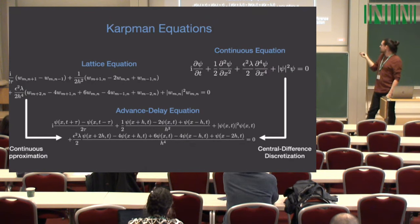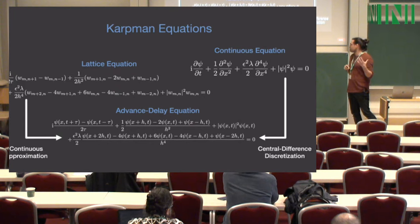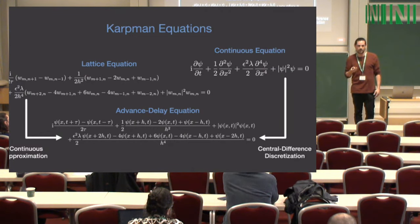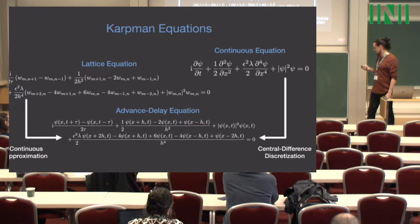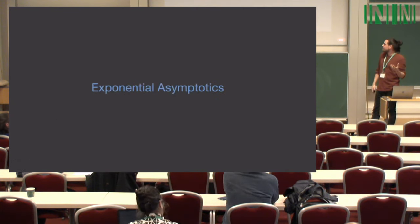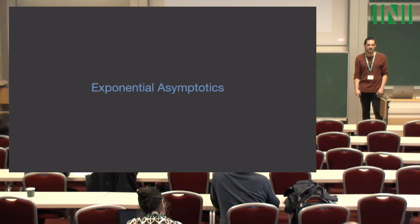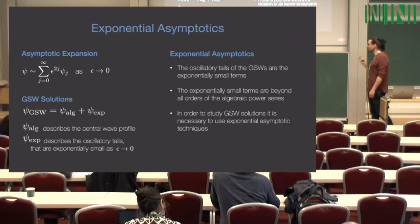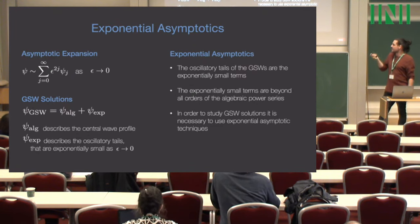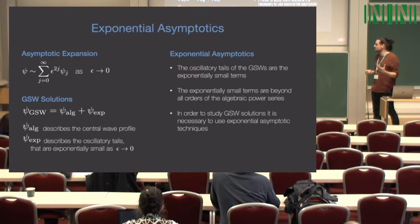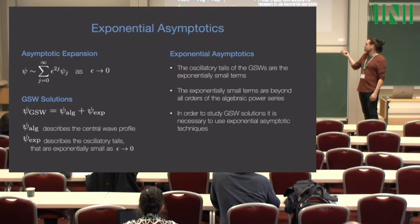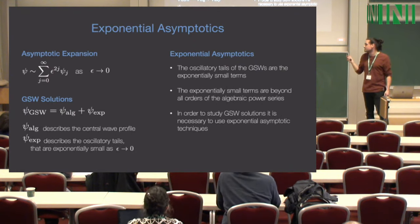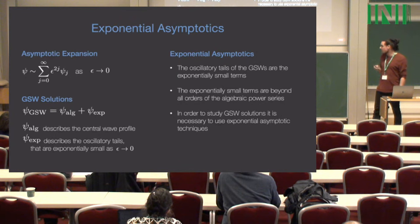We're going to use advanced delay equations to model generalised solitary waves in lattices. As Nalini touched on, you can do a Taylor series expansion for these advanced delay equations and turn them into infinite-order partial differential equations, which you can then study using exponential asymptotics. I'll briefly go over the exponential asymptotics procedure. We expand the solution using an asymptotic expansion — for generalised solitary waves, there's an algebraic component giving the solitary wave structure, and an exponentially small component giving the oscillatory tails.